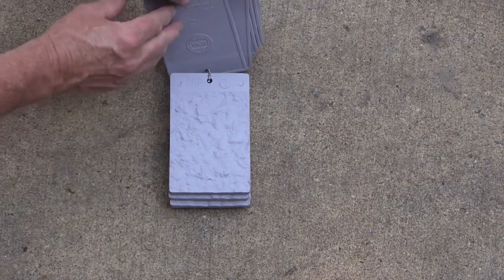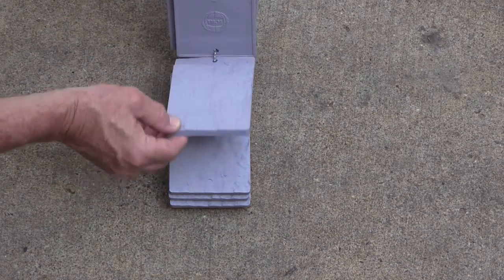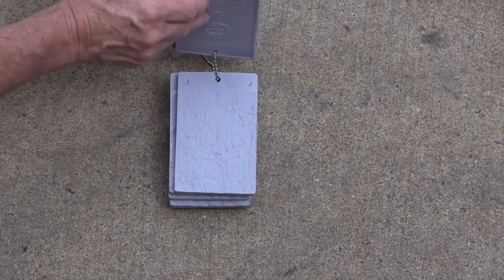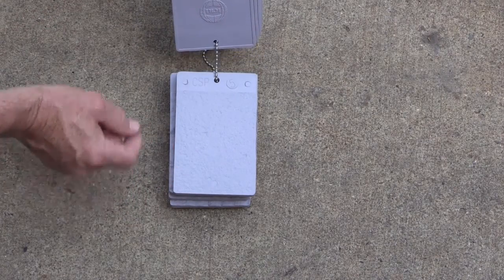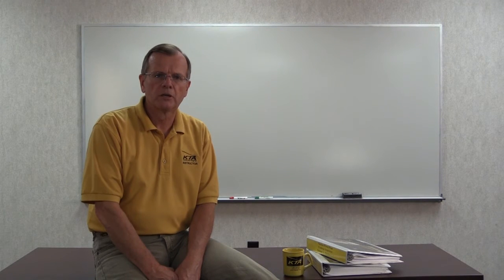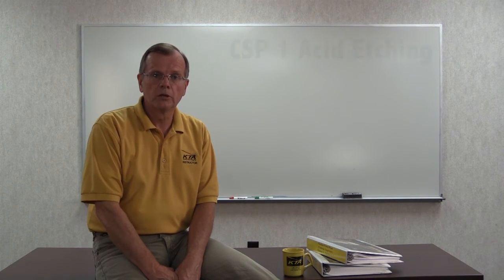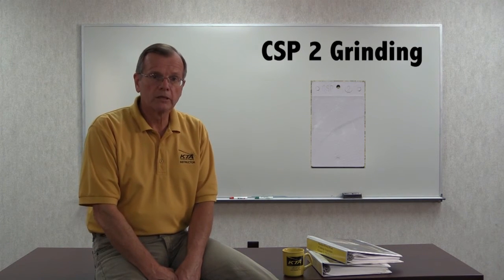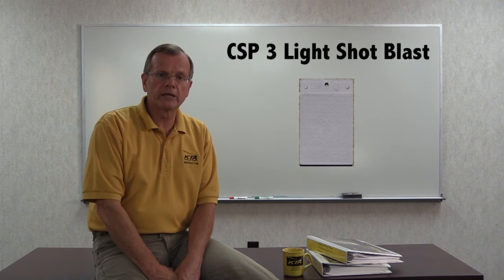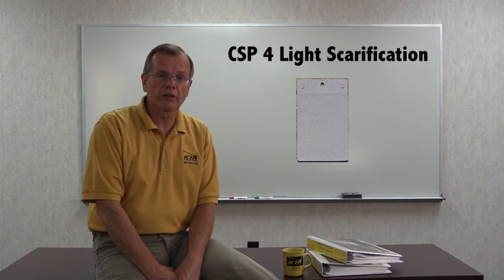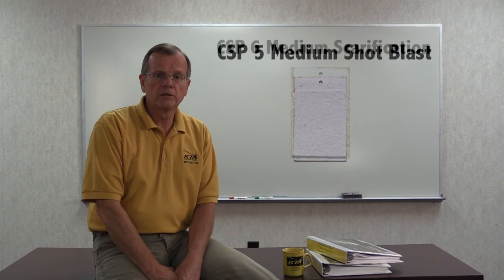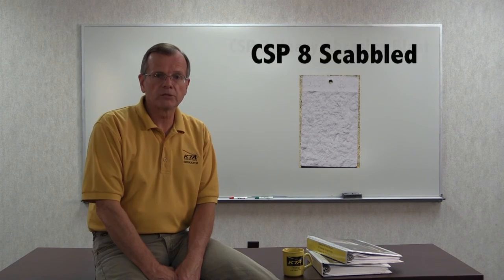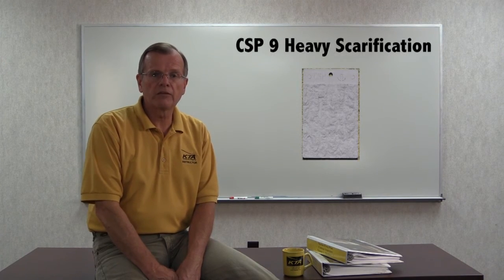The textures are reproduced in the form of rubber coupons that can be compared with the surface. Each profile coupon carries a CSP number ranging from 1 (minimal roughness) to 9 (very rough surface). The 9 degrees of roughness include: CSP-1 for acid etching, CSP-2 representing grinding, CSP-3 light shot blast, CSP-4 light scarification, CSP-5 medium shot blast, CSP-6 medium scarification, CSP-7 heavy abrasive blast, CSP-8 scabbling, and CSP-9 heavy scarification.